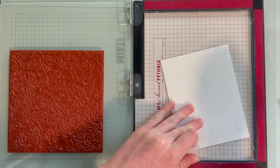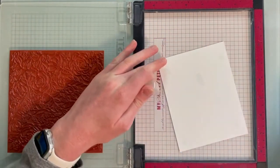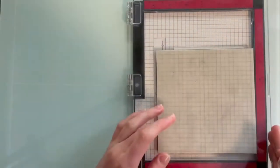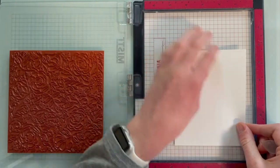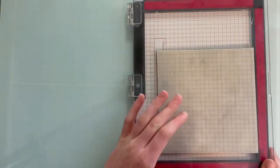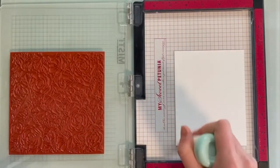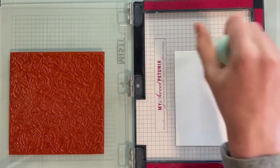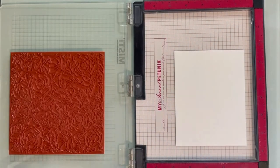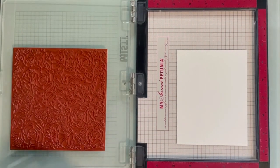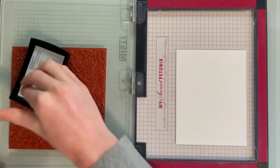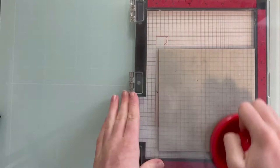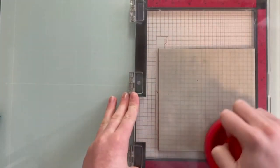For today, I will be using this background stamp that was in the My Monthly Hero Kit for April this year. But you can really use any background stamp that you have. I just happen to really like this one. I'm going to start by anti-static powdering the whole paper really well, and then I will ink the stamp up with this Versamark ink. Any clear embossing ink will do. And then I'm just going to stamp that on there.